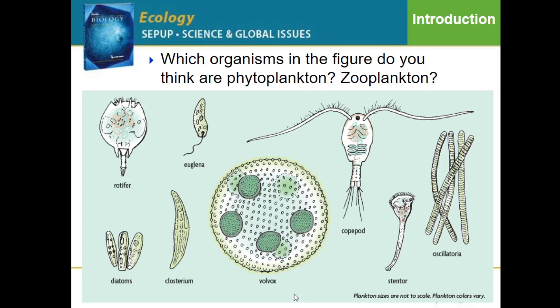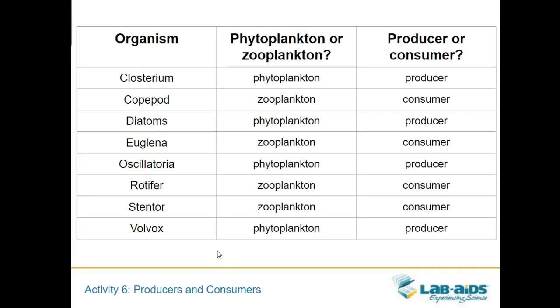We spent some time looking at eight different types of plankton, thinking about their characteristics. I'll link my microscopy images below if you want to look at those. The task was to think about what are the characteristics of these plankton and can we start to classify what might be phytoplankton or zooplankton based on those characteristics. For phytoplankton, we need to see structures that allow them to use photosynthesis — things like chloroplasts and green chlorophyll. For zooplankton, they're consumers, so they need things that allow them to move and consume energy — for example, a copepod has long cilia to grab food and move through water to find its food source. We made a chart laying out which ones are phytoplankton and which are zooplankton based on their characteristics.